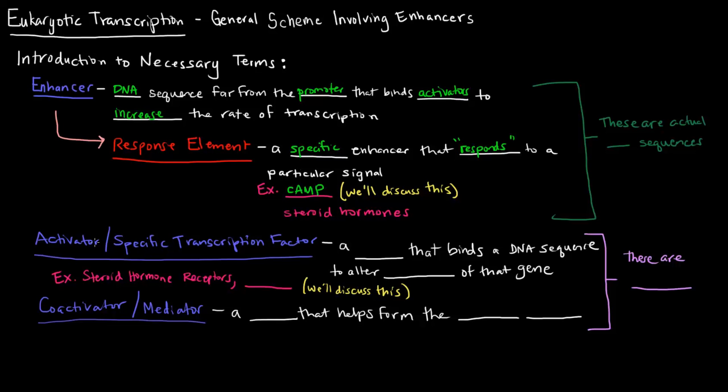There are also these things called activators, which are basically specific transcription factors. So an activator is a protein that binds a DNA sequence to alter expression of that gene. Now, steroid hormone receptors will be the things that actually bind these steroid hormones. Something that we'll talk about as a specific activator is CREB. We'll discuss that more later.